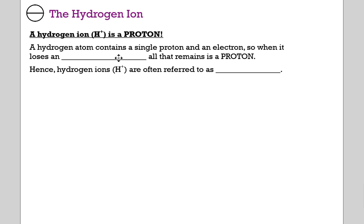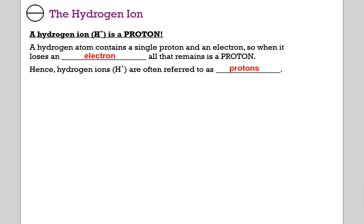Hydrogen ion, as I said earlier, is a proton. A hydrogen atom contains a single proton and a single electron, so when it loses an electron, all that remains is a proton. Hence, hydrogen ions are often referred to in this unit as protons. In fact, there's an entire class of pharmaceuticals designed to limit acid in the stomach called proton pump inhibitors — they inhibit the body's ability to secrete hydrogen ions to create the acidic environment your stomach has.